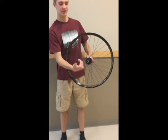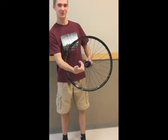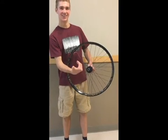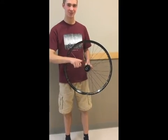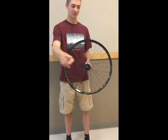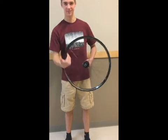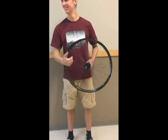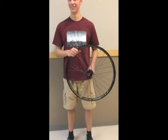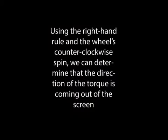The right-hand rule states that if an object is spinning counterclockwise, the force will be moving towards you in an outwards direction, perpendicular to the spin. Using the right-hand rule and the wheel's counterclockwise spin, we can determine that the direction of the torque is coming out of the screen.